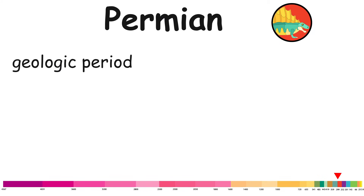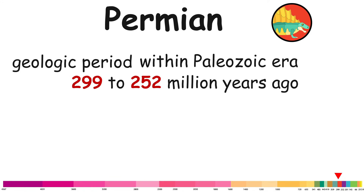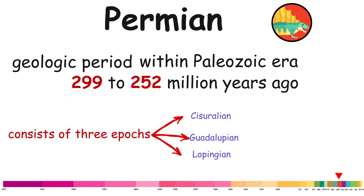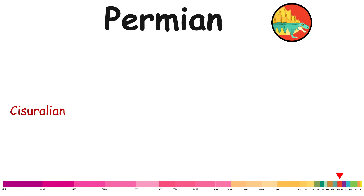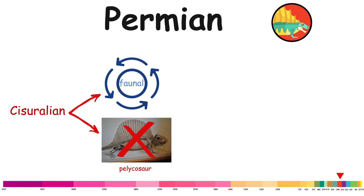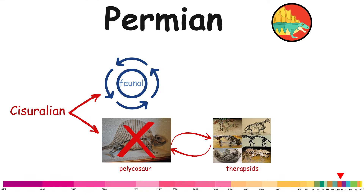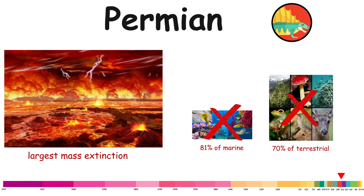Permian. The Permian is a geologic period within the Paleozoic era, spanning approximately from 299 to 252 million years ago. It consists of three epochs: Cisuralian, Guadalupian, and Lopingian. The Permian witnessed the diversification of the two groups of amniotes, the synapsids and the sauropsids. The end of the early Permian Cisuralian saw a major faunal turnover, with most lineages of primitive pelycosaur synapsids becoming extinct, being replaced by more advanced therapsids. The Permian ended with the largest mass extinction in Earth's history, in which nearly 81% of marine species and 70% of terrestrial species died out, associated with the eruption of the Siberian Traps.